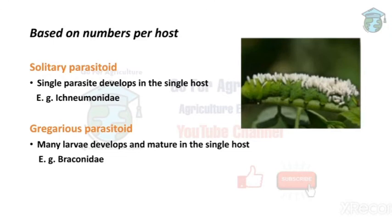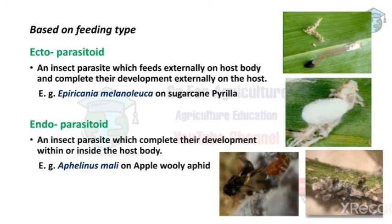Next, based on number per host: in solitary parasitoids, only one larva develops in a single host. Example: Ichneumonidae. In gregarious parasitoids, many larvae develop in a single host.